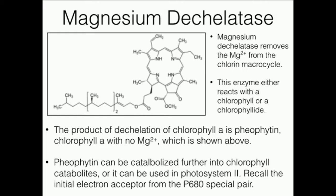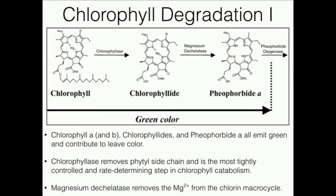Magnesium d-chelatase is a really critical enzyme for photosystem II in particular. In chlorophyll degradation, magnesium d-chelatase reacts with the chlorophyllide — the molecule that already has its phytial side chain removed. However, there's another reaction that magnesium d-chelatase can do: it does the same reaction removing the magnesium, but it does it from chlorophyll A, the initial molecule.